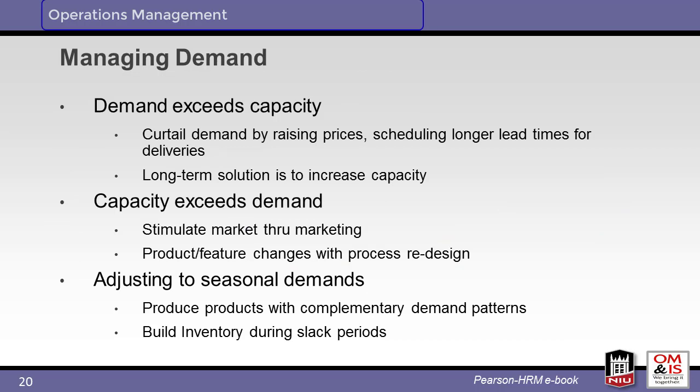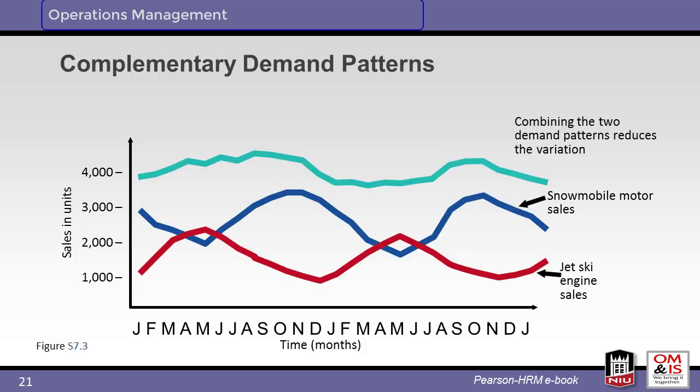When we look at demand, you can have three different scenarios. When demand exceeds capacity, the manager may increase prices, schedule longer lead times, and increase capacity. If capacity exceeds demand, the manager may stimulate demand through marketing and product improvements. When dealing with seasonal demand, companies can produce complementary products or build inventory during the off-season — for example, a store that sells jet skis in the summer and snowmobiles in the winter, resulting in a more level combined demand.